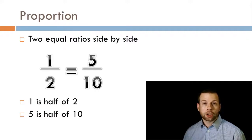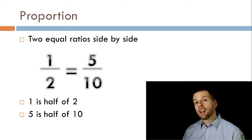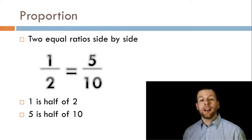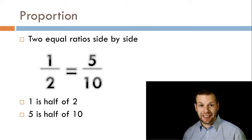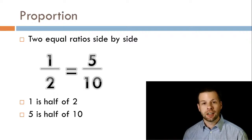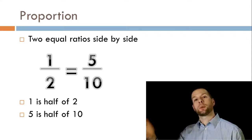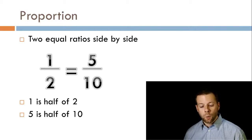Now let's talk about proportion. Proportion is when the left side of an equation is equal to the right side. Take the easy example: one over two equals five over ten. Five is half of ten, just like one is half of two. These are equal ratios on each side. One over two is the exact same thing as five over ten, or ten over twenty — it all says one half.